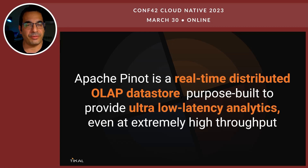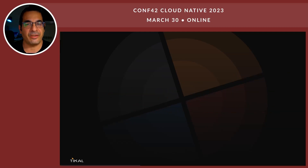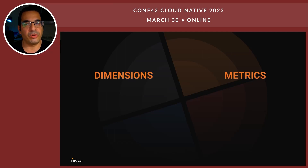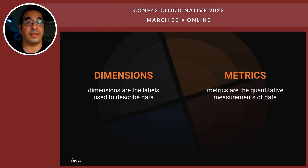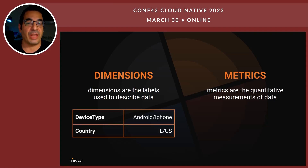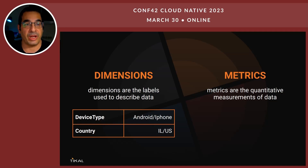Let's put this into context and explain the problem. In the analytics world, we usually talk about dimensions and metrics. Dimensions are the labels used to describe data, and metrics are the quantitative measurements of the data. For example, dimensions would be device type — Android or iPhone — or country, which would be Israel, US, Mexico, or any other country.